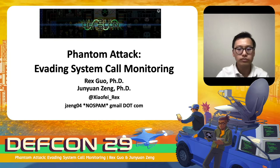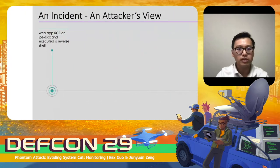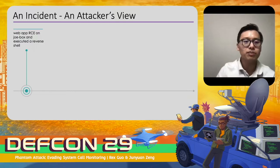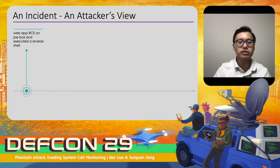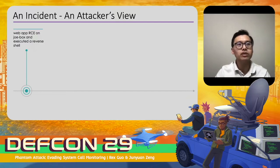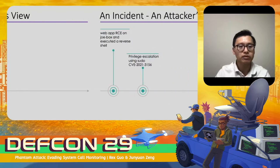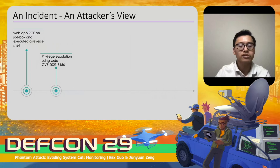Imagine an attacker compromised your Linux infrastructure. The attacker first compromised the web app through a web app remote code execution, then he launches a reverse shell. Then he discovered a vulnerability on the system — he can elevate privileges using the sudo vulnerability CVE-2021-3156.